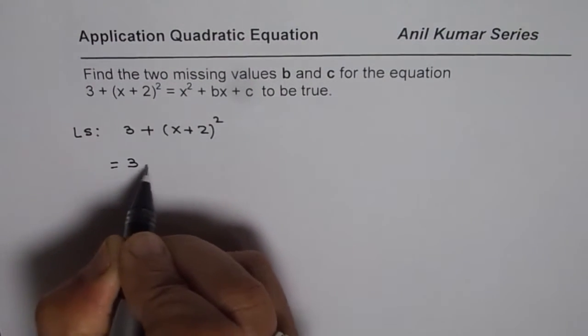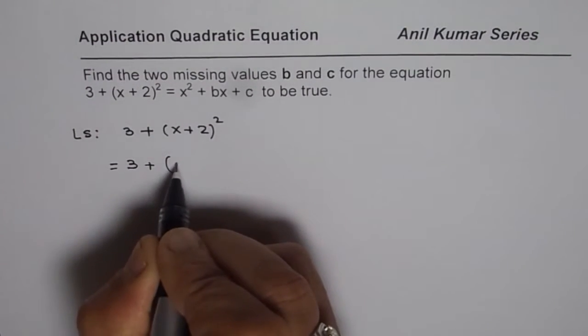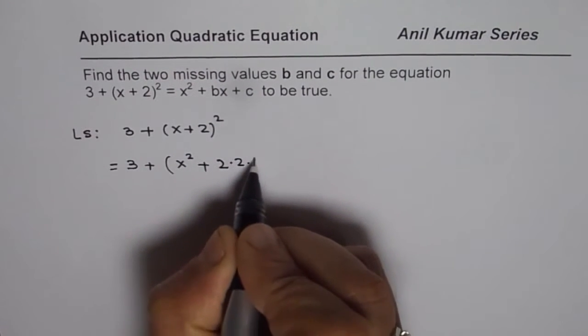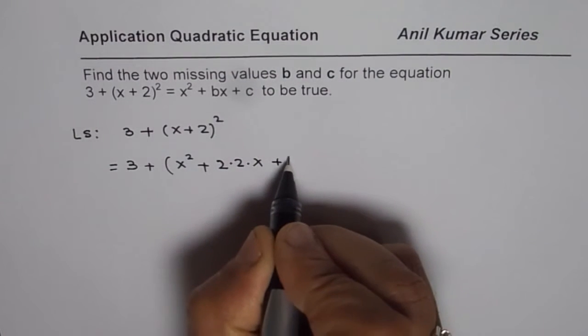So it is 3 plus x plus 2 whole square will be x square plus 2 times 2 times x plus 2 square.